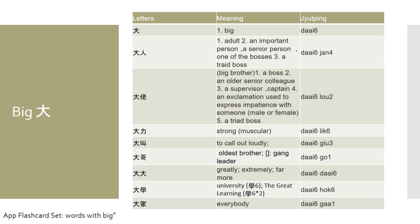Another thing is you could put two big characters together into the word daai daai, which reinforces meaning — it means greatly, extremely, or far more. For example, if you want to say 'extremely increased,' you would say daai daai tei sing, daai daai tei sing — where daai daai means 'extremely' and tei sing means 'increased' in Cantonese.